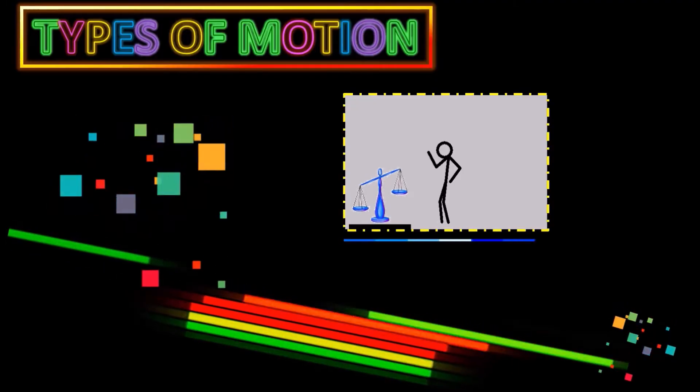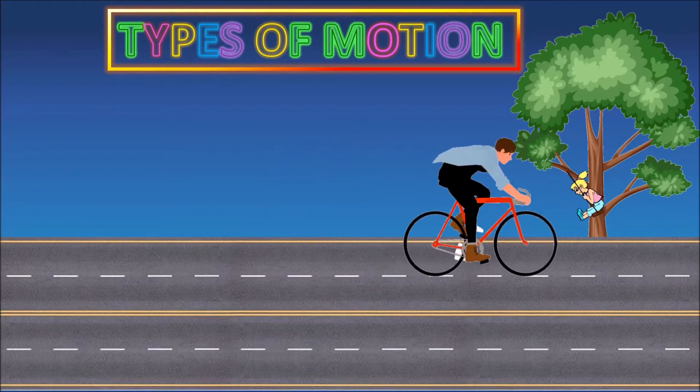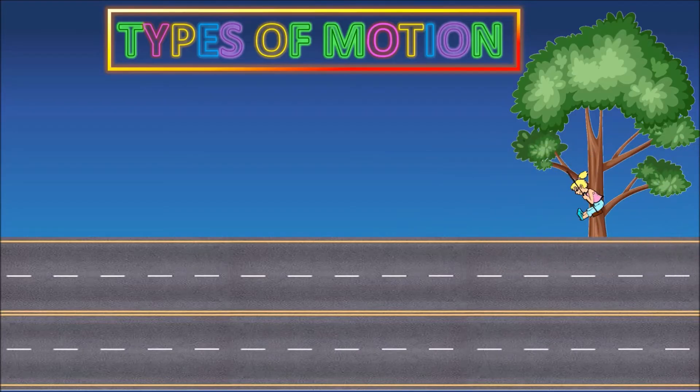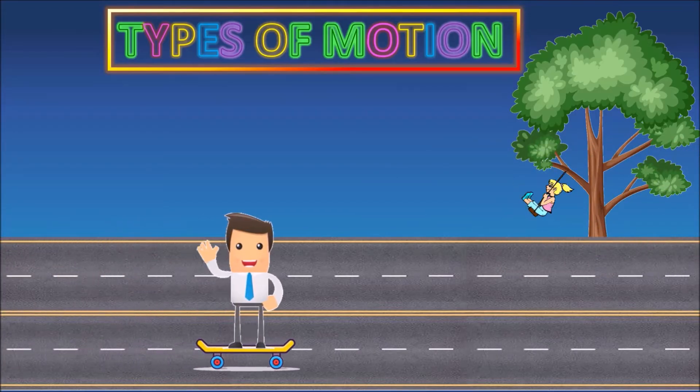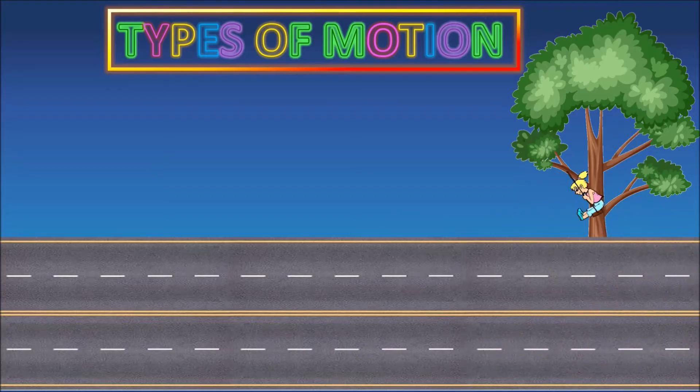For example, a cyclist going on a straight road, the blades of a moving fan, a child on a swing. They are all regarded as being in motion.